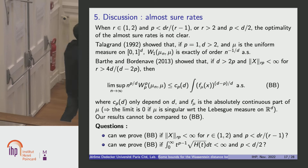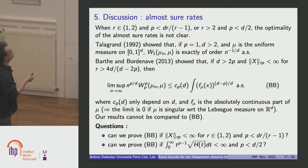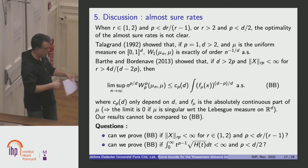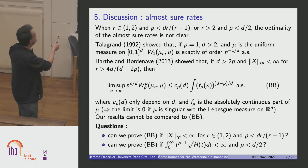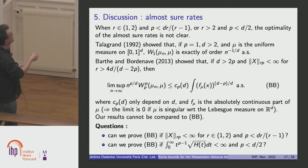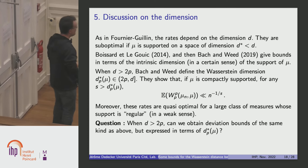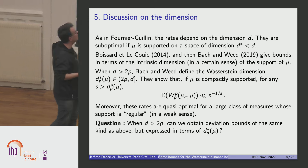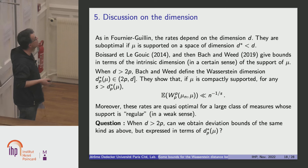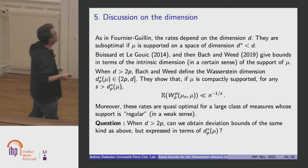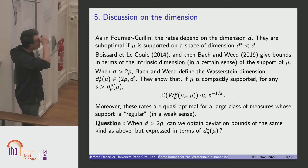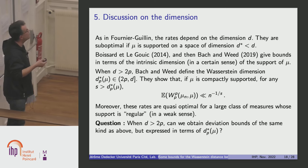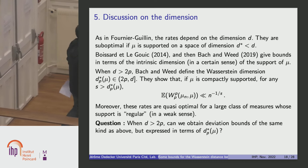This gives a transition to the discussion about dimension: if mu has no density with respect to the Lebesgue measure on R^D, then the rate should be better. As in Fournier and Guillain, all the rates of convergence depend on the dimension D, and they are suboptimal if mu is supported in a vector space of dimension D* less than D. Boissard and Le Gouic, and after them Bach and Weed, give bounds in terms of the intrinsic dimension of the support of mu.